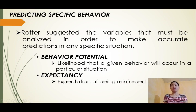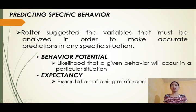The first variable is Behavior Potential — the possibility that a particular response will occur at a given time and place in relation to its likely reinforcement. The second variable is Expectancy — the confidence that a particular reinforcement will follow a specific behavior in a specific situation or situations.